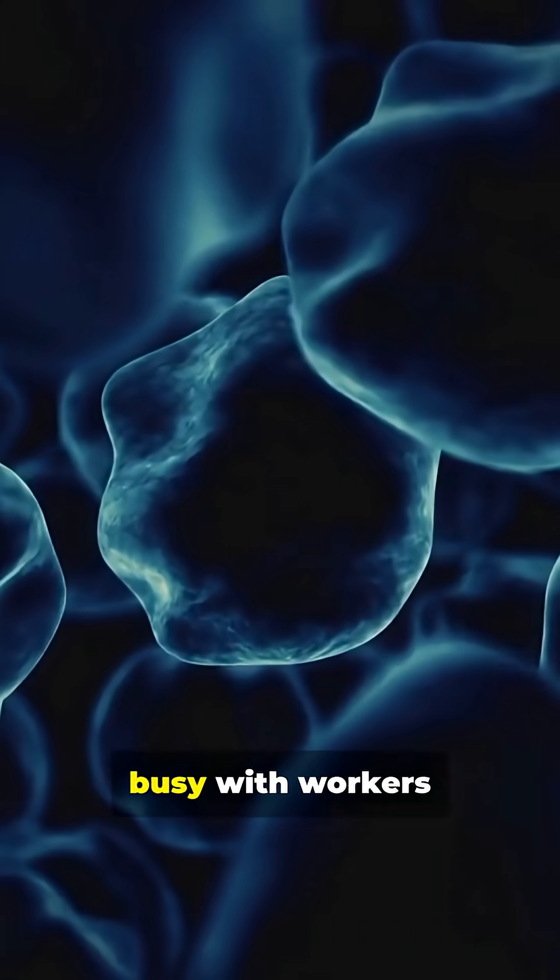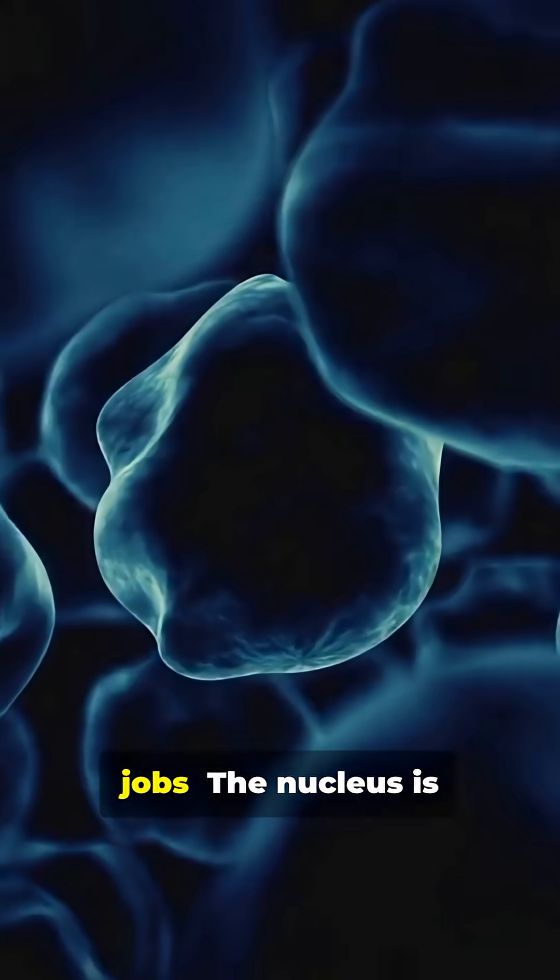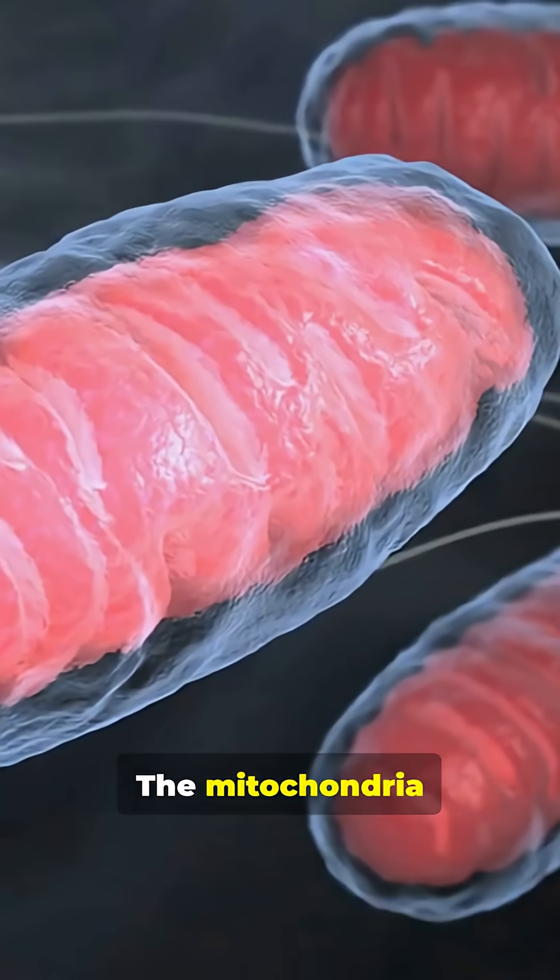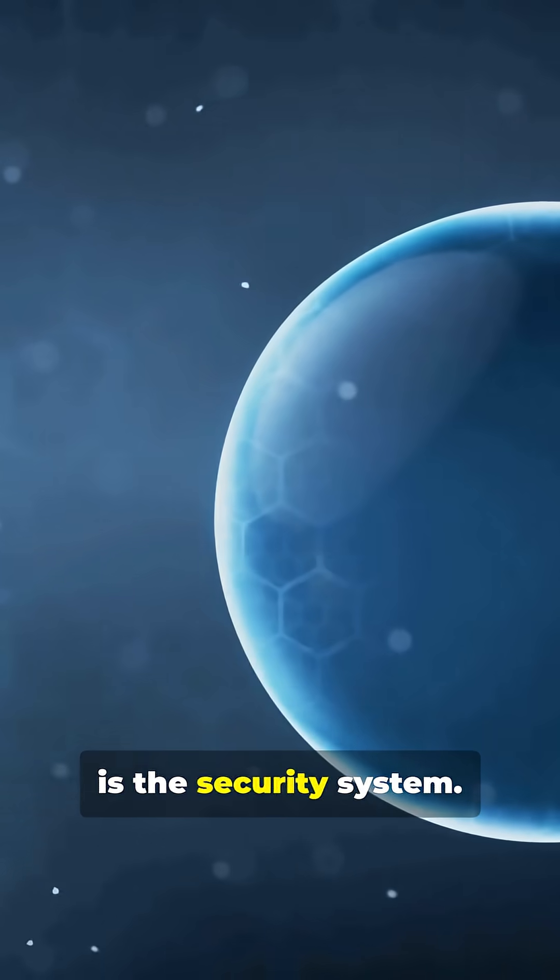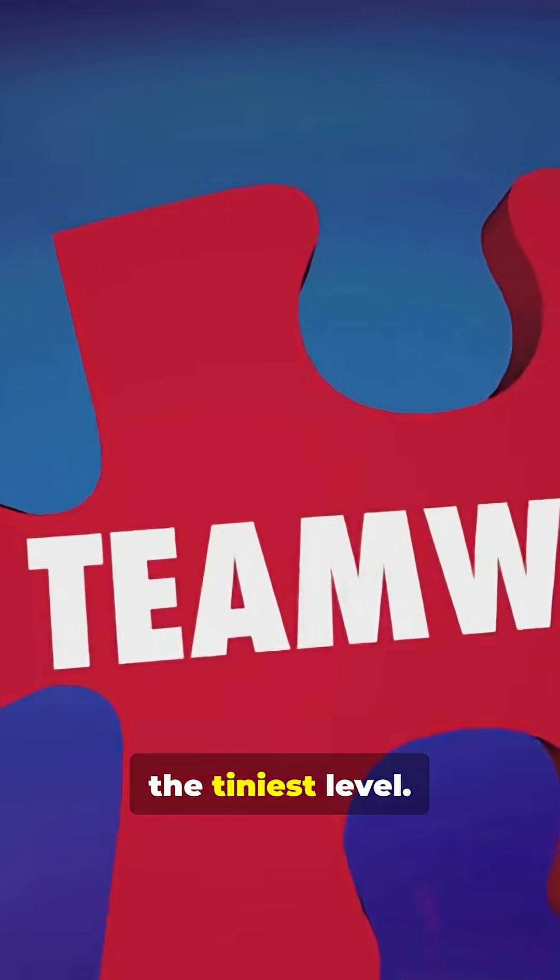Each cell is like a tiny city, busy with workers doing different jobs. The nucleus is the boss, the mitochondria are the power plants, the cell membrane is the security system. It's teamwork at the tiniest level.